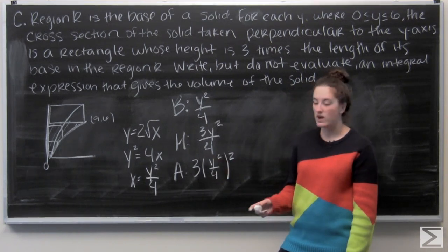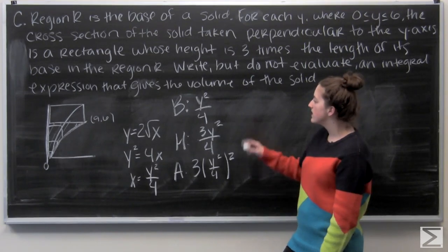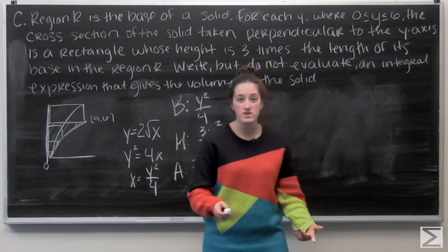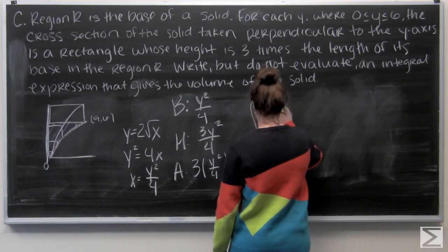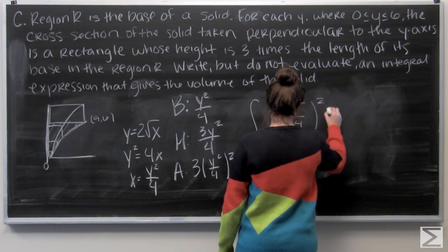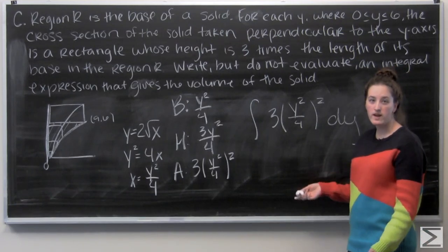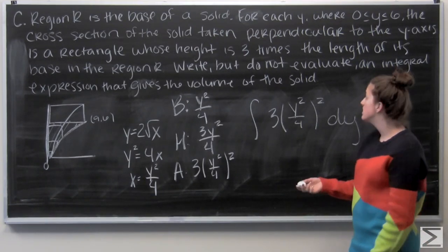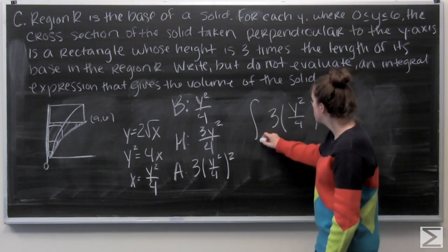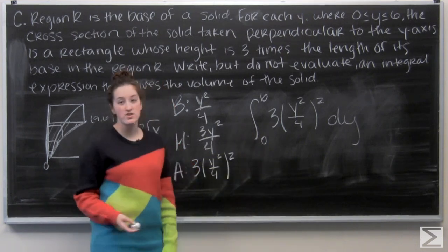The area of one rectangle is base times height: (y²/4) times (3y²/4), which equals 3(y²/4)². To find the volume, we integrate this area function with respect to y. The bounds are given directly by the problem: y goes from 0 to 6. So the integral expression is the integral from 0 to 6 of 3(y²/4)² dy.